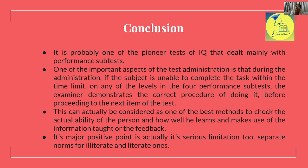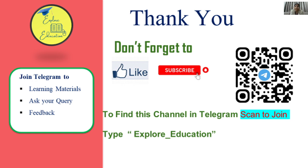Its major positive point is also its most serious limitation — the separate norms for illiterate and literate individuals. The 1950s standardization is still being followed today, girls are absent from the sample, and subjects above 16 years were not standardized. This raises serious concerns about whether having two separate norms for literate and illiterate individuals is appropriate. That said, thank you all for watching. Please like and subscribe to Explore Education.